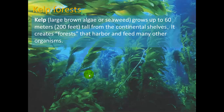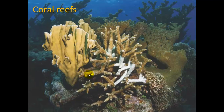Kelp is actually an algae, not a plant, even though we often think of it that way. It's a large brown algae, also called seaweed, and grows up to 60 meters or 200 feet tall from the continental shelves. It creates forests that harbor and feed many other organisms.